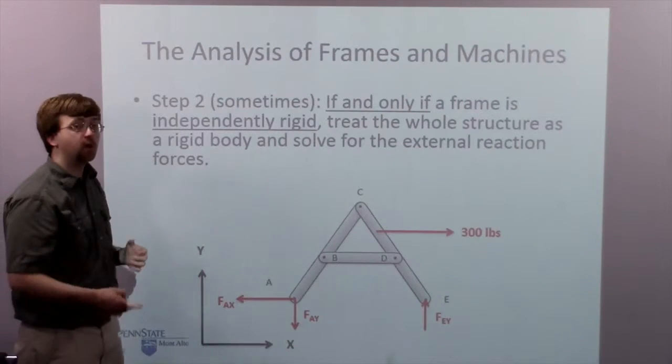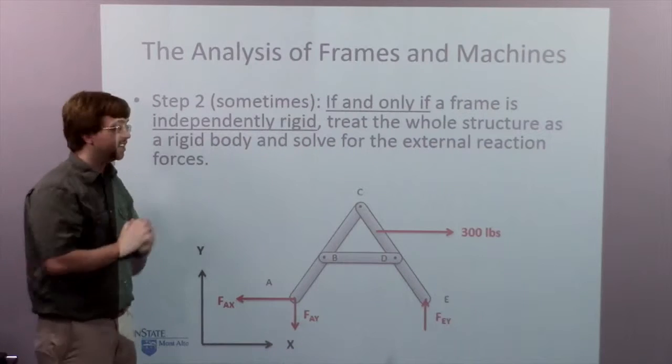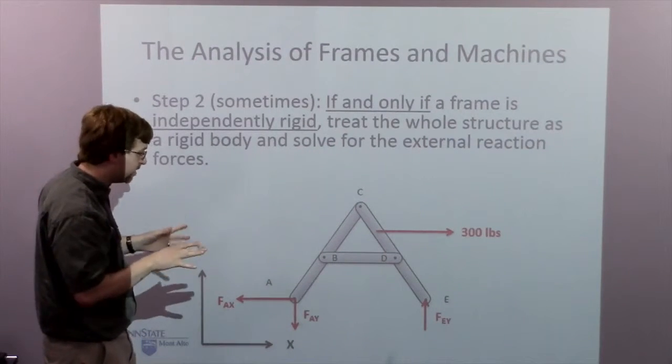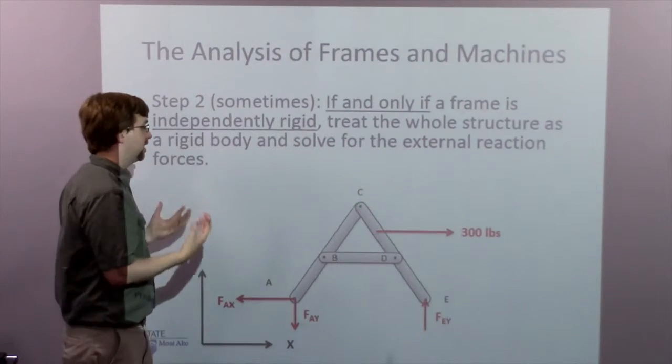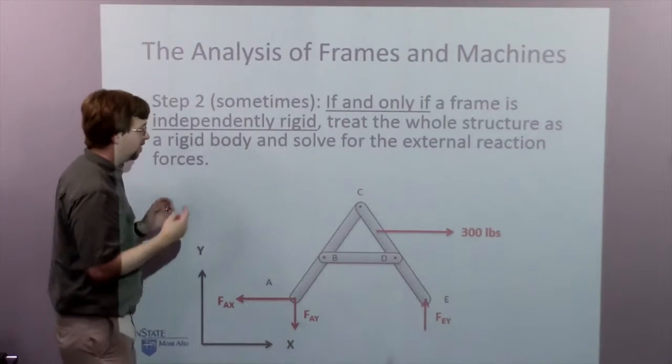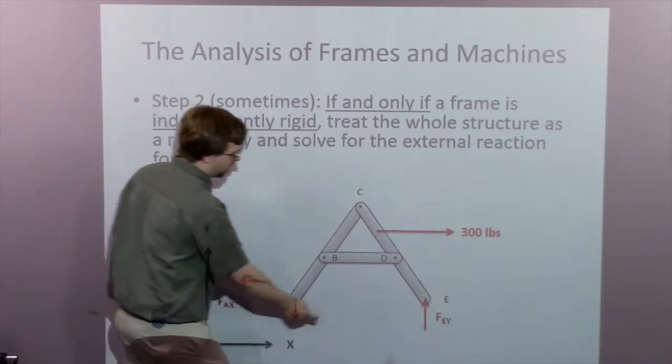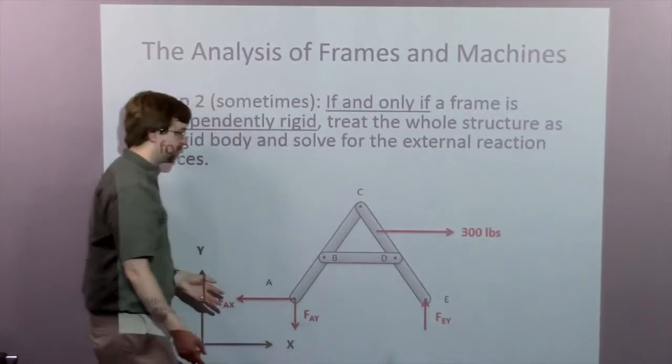So step two, this is if and only if the frame is independently rigid, I can separate this from the base and treat it as a full rigid body. So I would have, from this pin joint, I'd have forces in the X and Y. And I had a roller over on this side, I have force in the Y.